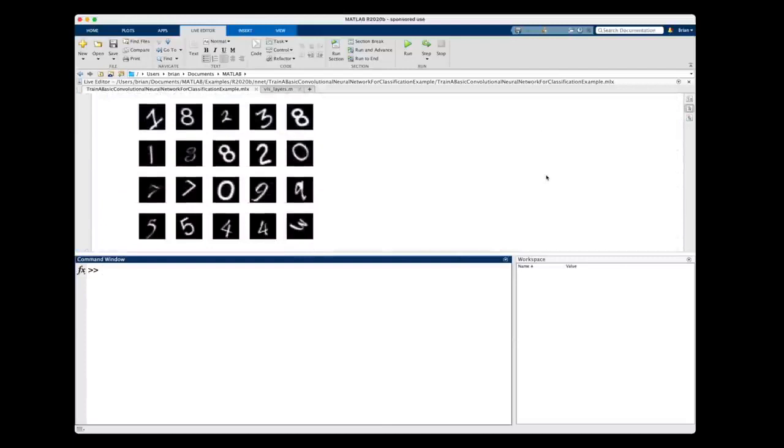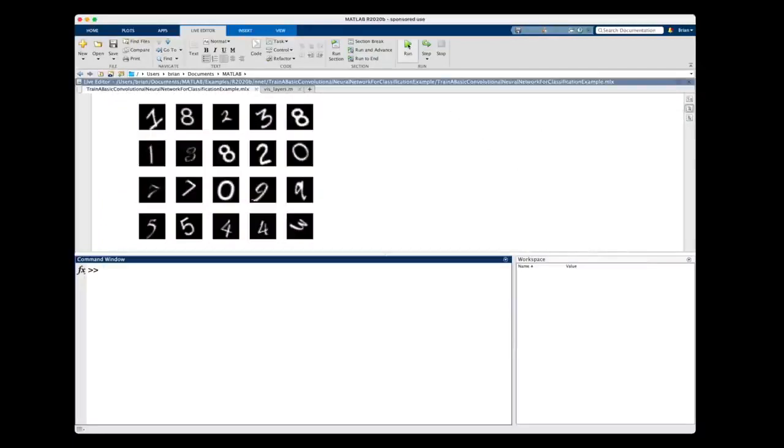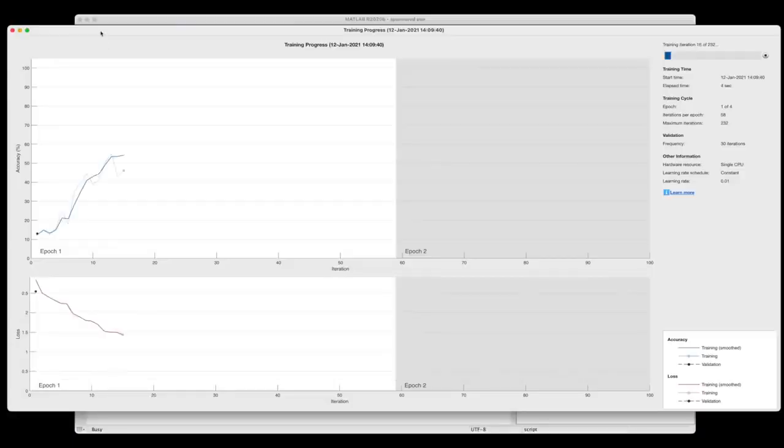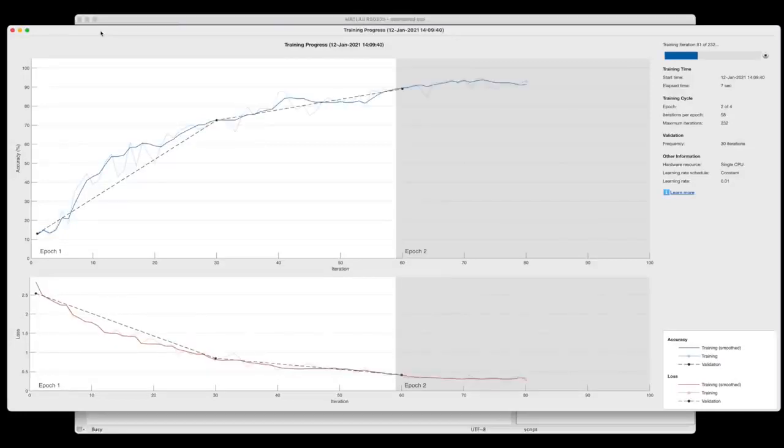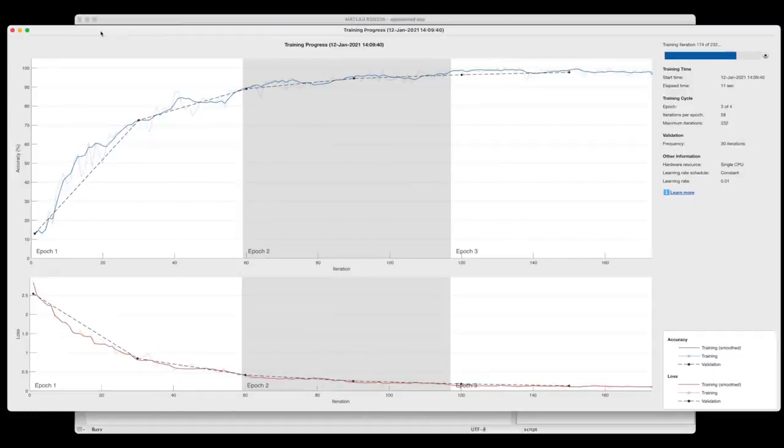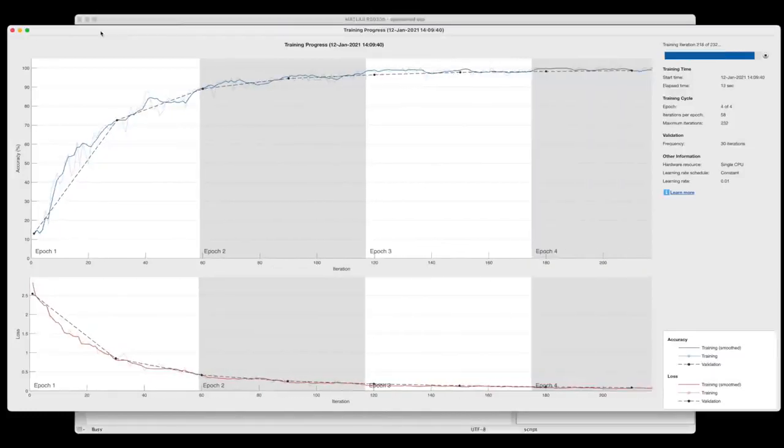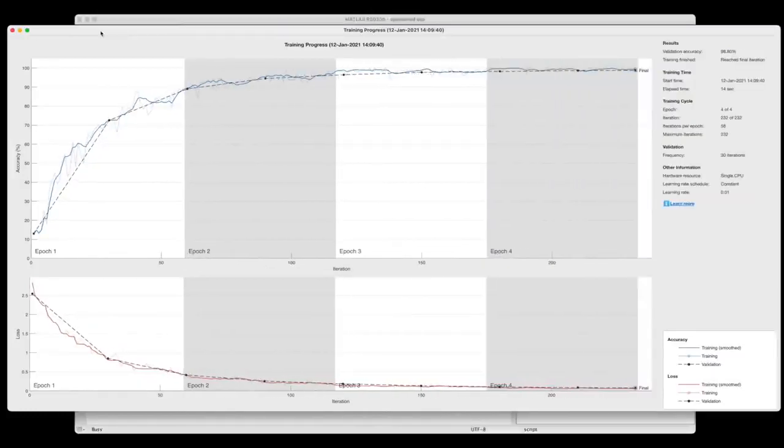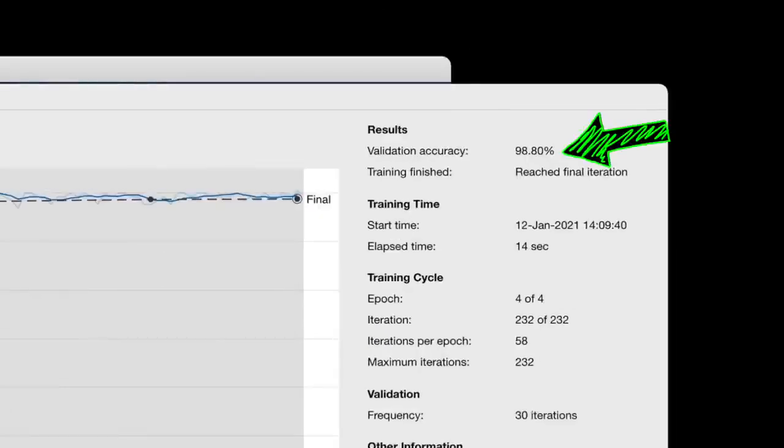This example trains a neural network to recognize handwritten numbers. And this example trains the network using 750 labeled images for each of the 10 numbers. It then uses 250 images for each number to verify the accuracy of the network, which we can see here is about 99% accurate, so not too bad.